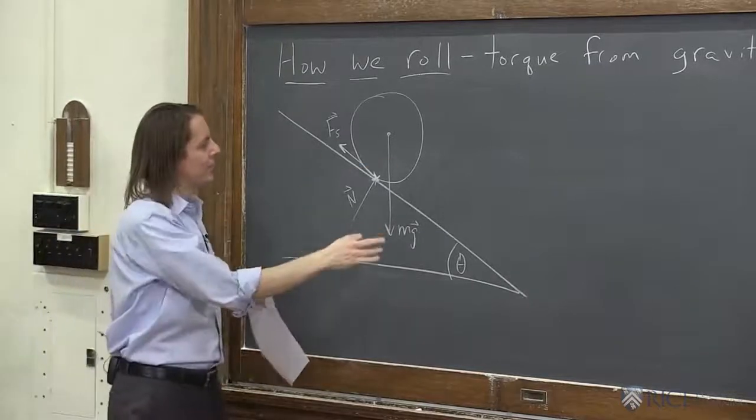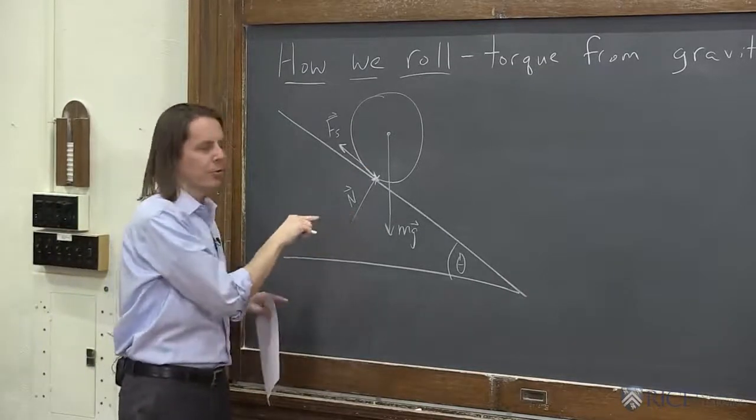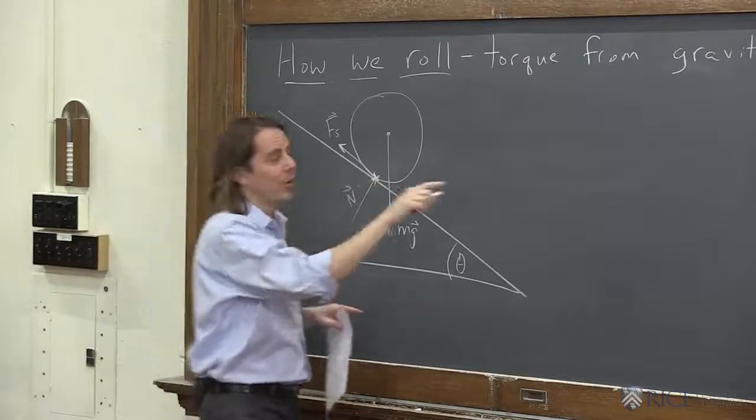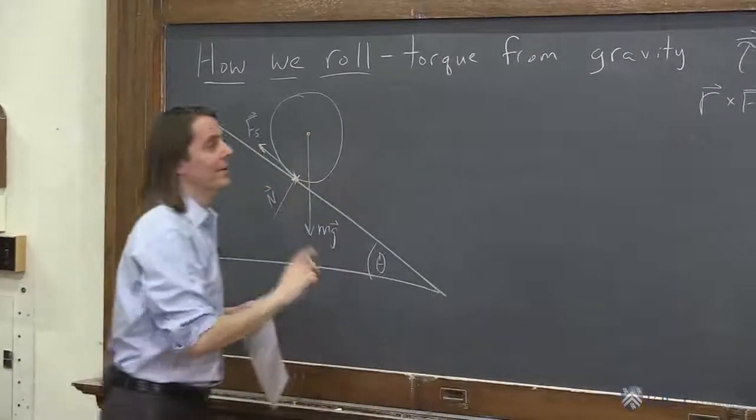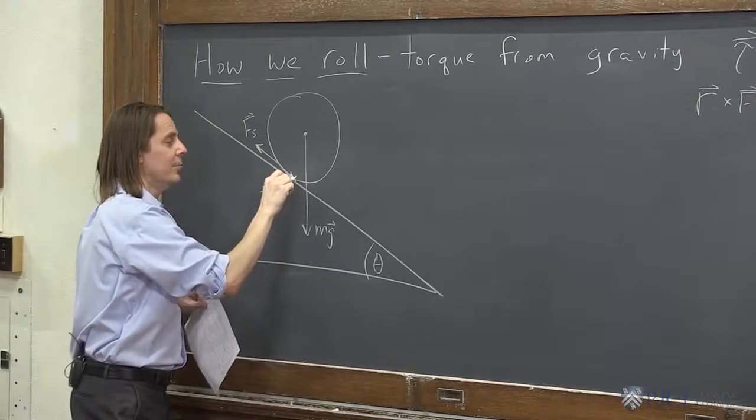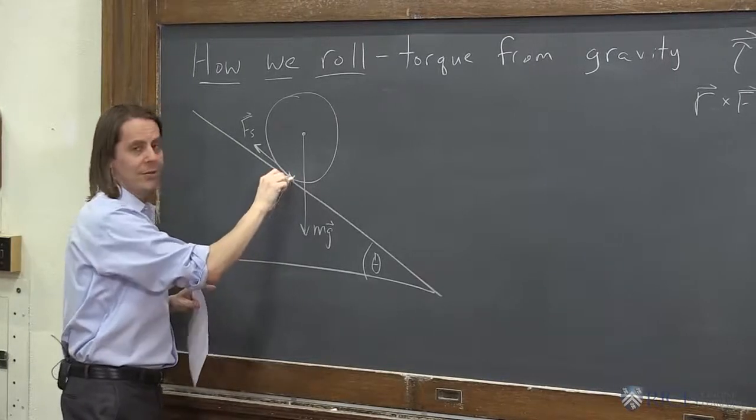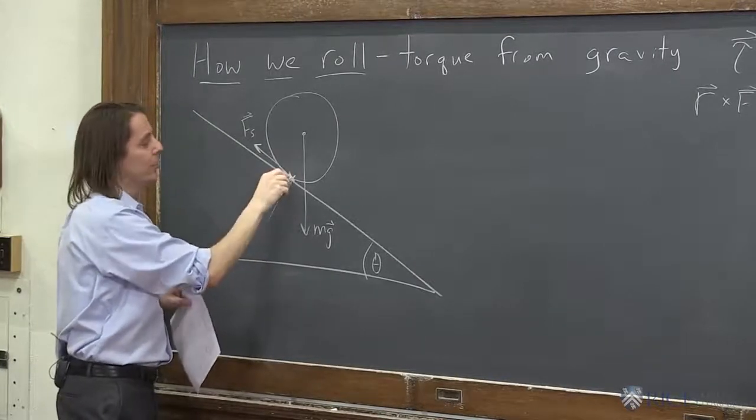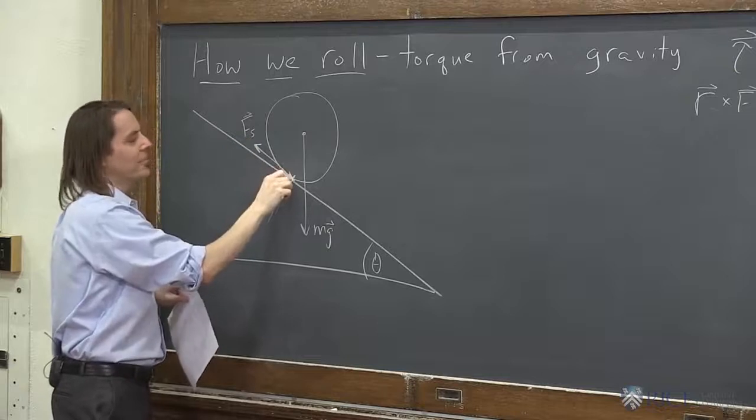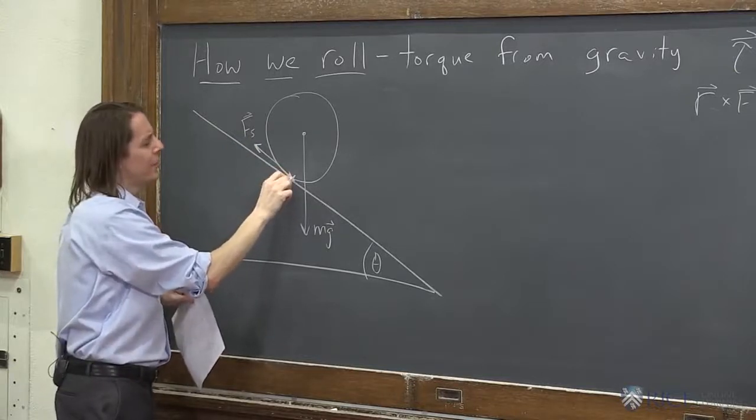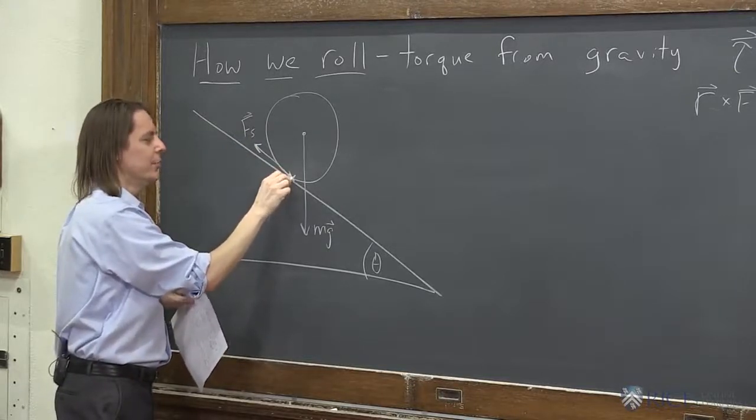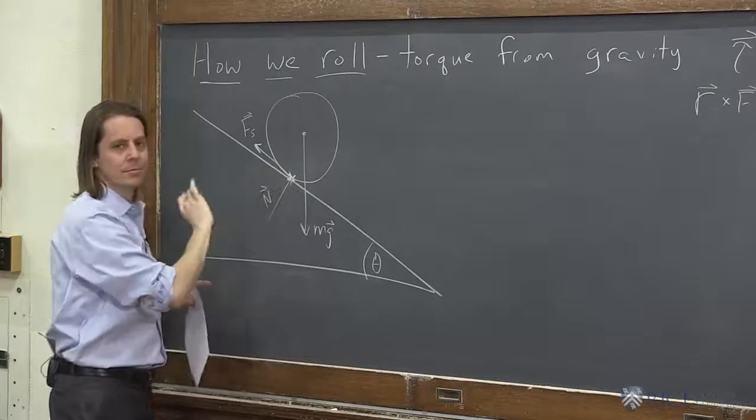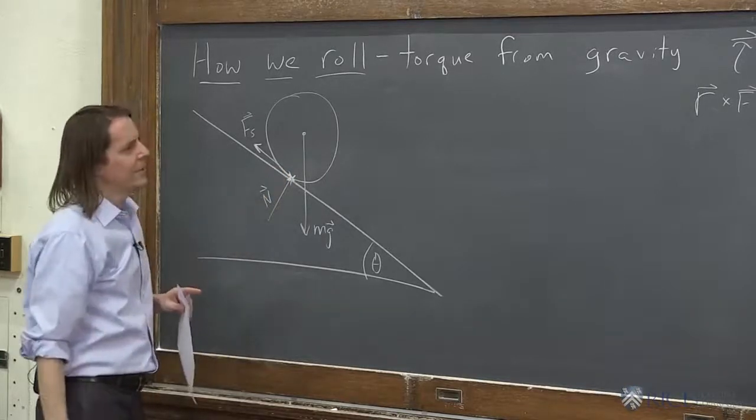We've got to remember that torque is R cross F, where R is the vector from the axis of rotation to the point the force is applied. So to calculate a torque, you've got to define an axis of rotation. We're going to describe this around the rotation axis around which it is actually rotating. The wheel, as we've talked about, is actually rotating about that point where the edge of the cylinder touches the ramp.